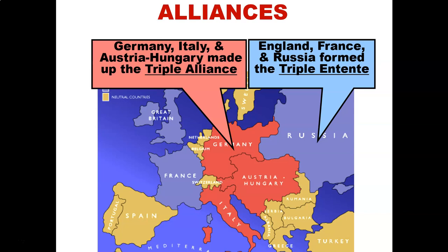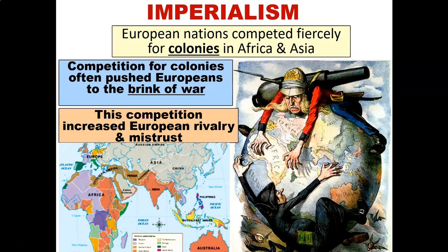The yellowish-brown colors on the map represent neutral nations during this conflict. The third cause of World War One is imperialism. European nations competed in Africa as well as Asia. Competition for colonies often pushed European nations to the brink of war. This competition increased European rivalry and mistrust — they did not trust each other — and this was getting to a point where ultimately it leads to the beginning of World War One.